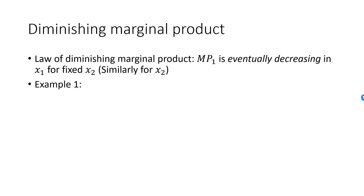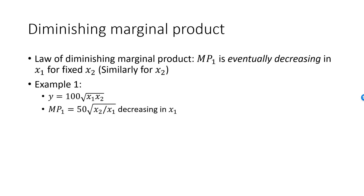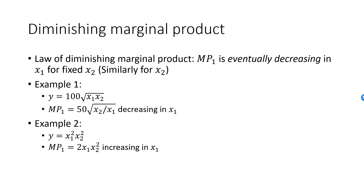A few mathematical examples. In my first example, y is 100 times the square root of x1 times x2. MP1 equals 50 times the square root of x2 over x1, which is a decreasing function in x1. You can also verify that MP2 is a decreasing function in x2. Therefore, this production function satisfies the law of diminishing marginal product. In my second example, y is equal to x1 squared times x2 squared. MP1 is 2 times x1 times x2 squared, and this is increasing in x1 for all values of x1. This production function does not satisfy the law of diminishing marginal product.